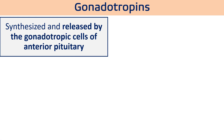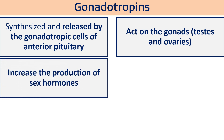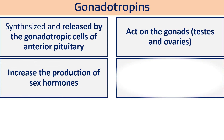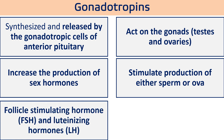These gonadotropins are synthesized and released by the gonadotropic cells of the anterior pituitary. Both FSH and LH act on the gonads — in males the testes and in females the ovary. When gonadotropins work on these organs, they increase the production of sex hormones, especially estrogen and progesterone, and ultimately stimulate spermatogenesis and oogenesis — increasing production of sperm and ovum.